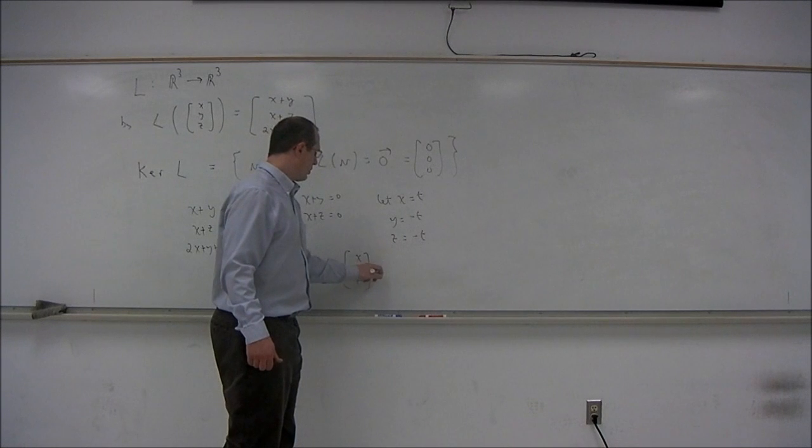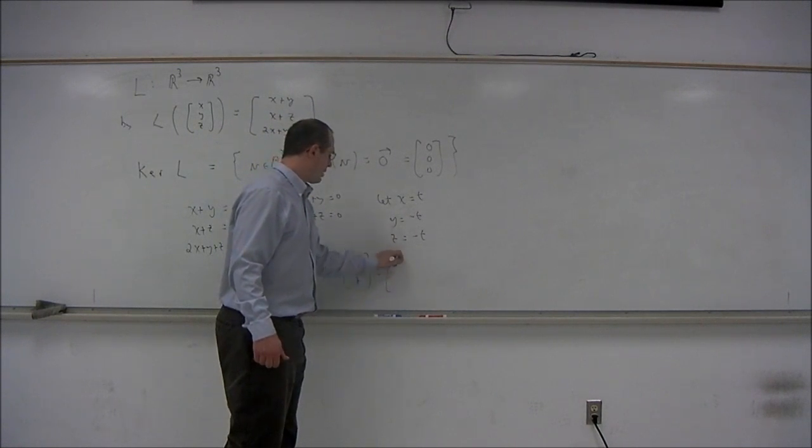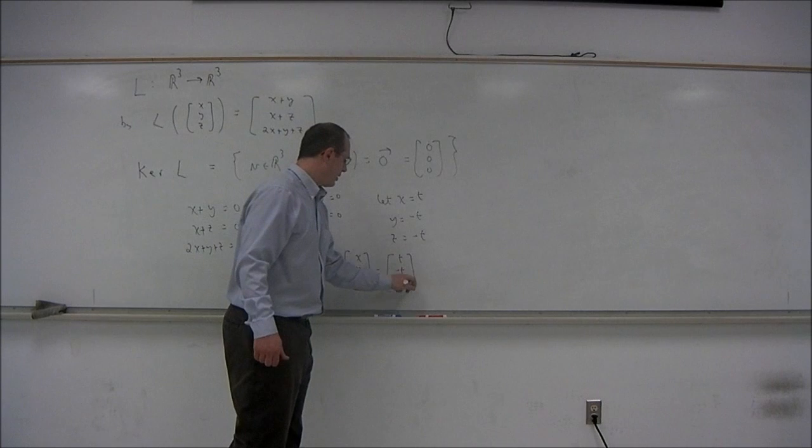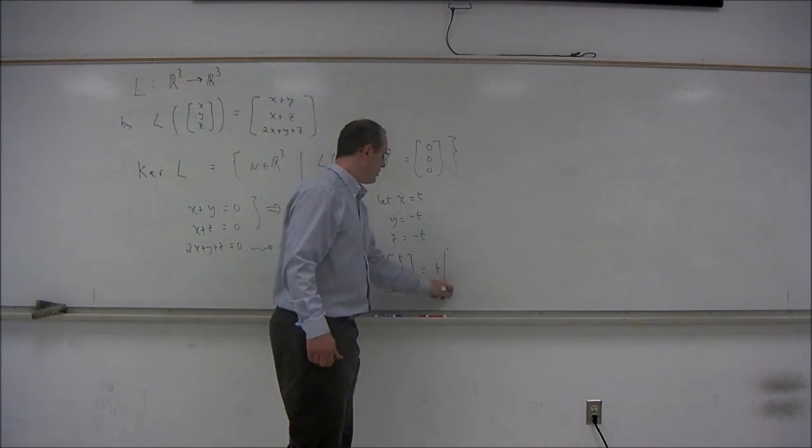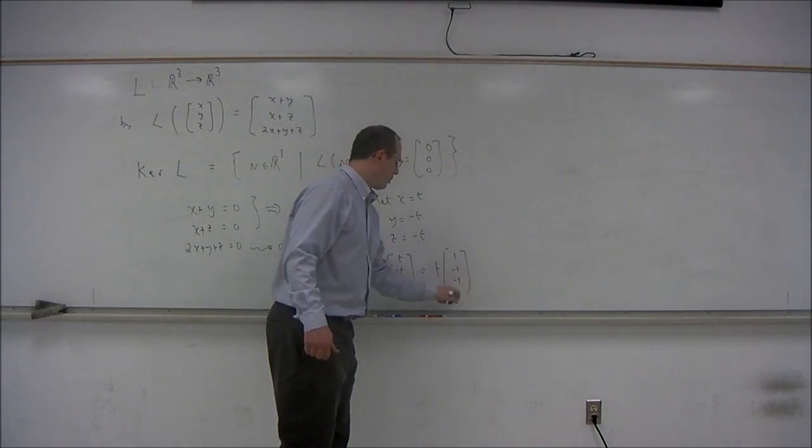z) = (t, -t, -t), which is t times (1, -1, -1).